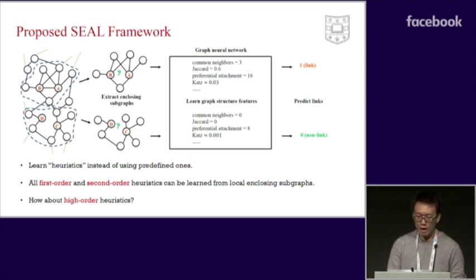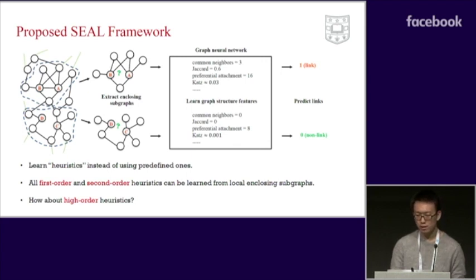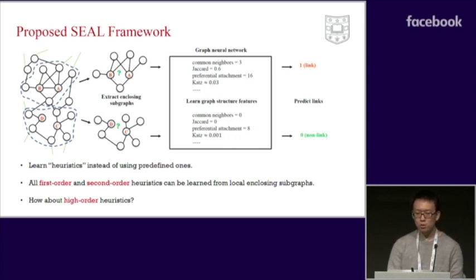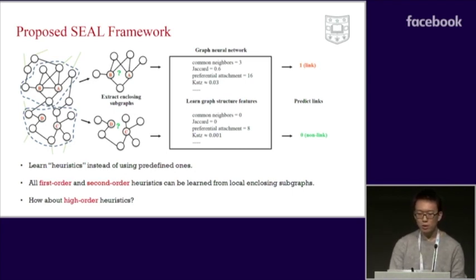As we can see, if the subgraphs are large enough, we can accurately calculate all the first-order and second-order heuristics based merely on these subgraphs. Using a graph neural network, SEAL tries to learn such suitable heuristics, but the learned features are general and do not rely on any predefined heuristics.